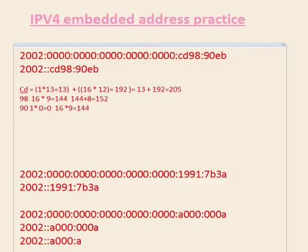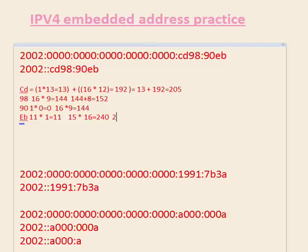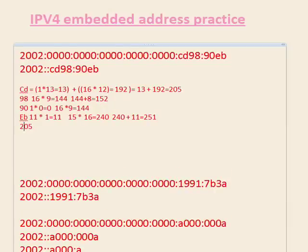You can see we already have the first three octets of the IPv4 address: 205.152.144. We have one more octet — EB. B is eleven, so eleven times one is eleven. E: we know F is sixteen so E must be fifteen. Fifteen times sixteen equals two hundred forty. Two hundred forty plus eleven equals two hundred fifty-one. So our address is 205.152.144.251.